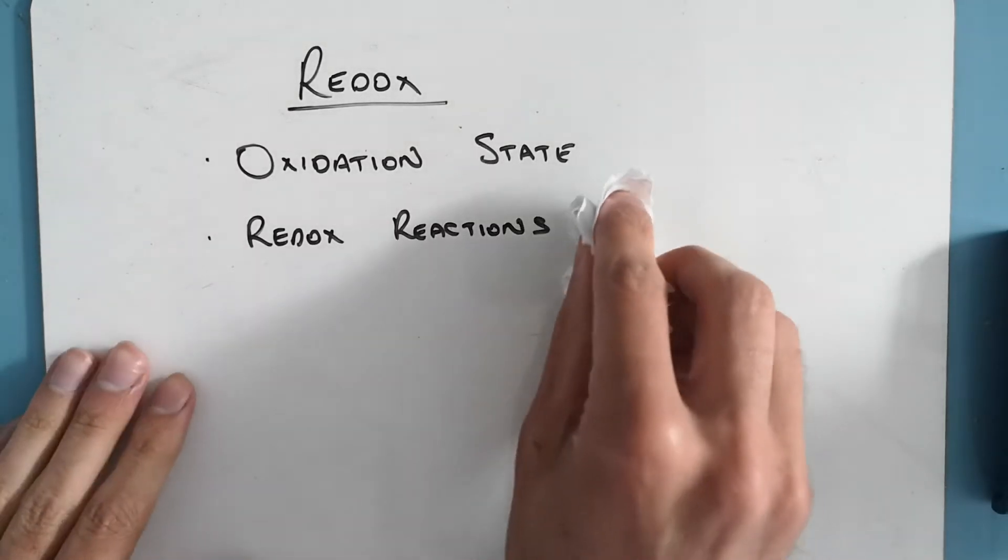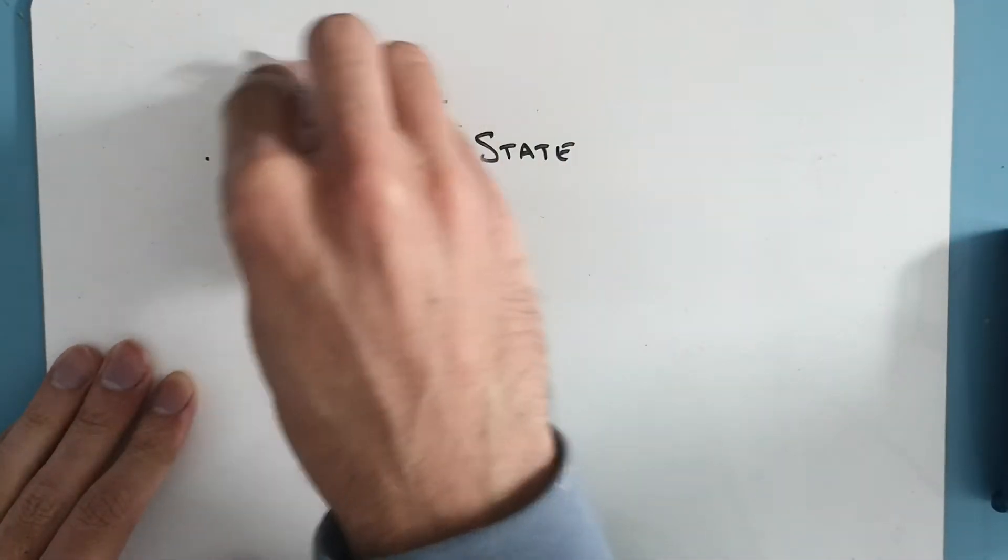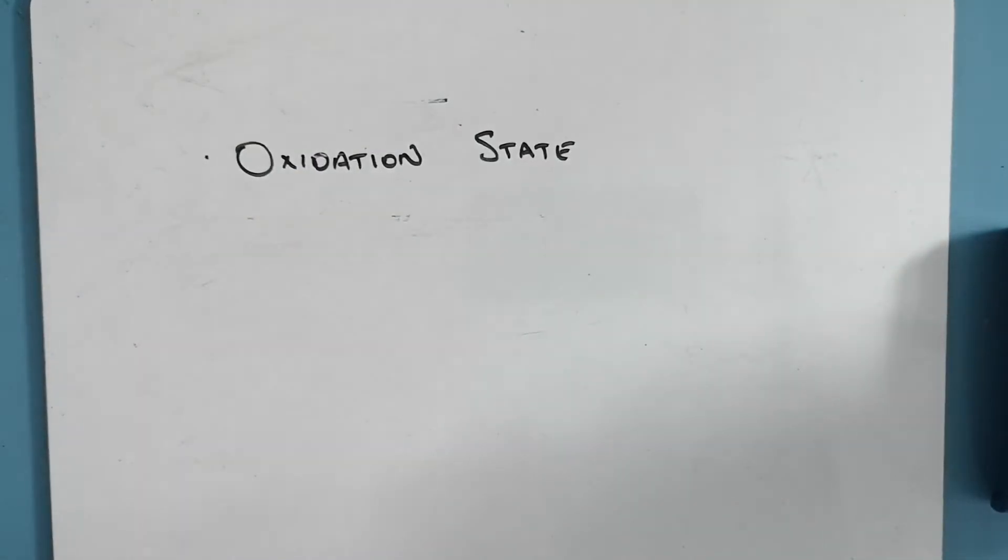So the theory of oxidation state, this is just a hypothetical value we apply to atoms when they're bonded or unbonded. And we say, well, if it was an ionic bond, where would the electrons go? Obviously this doesn't always happen, electrons kind of sit somewhere in between, but it's a hypothetical estimation of where the electrons go.